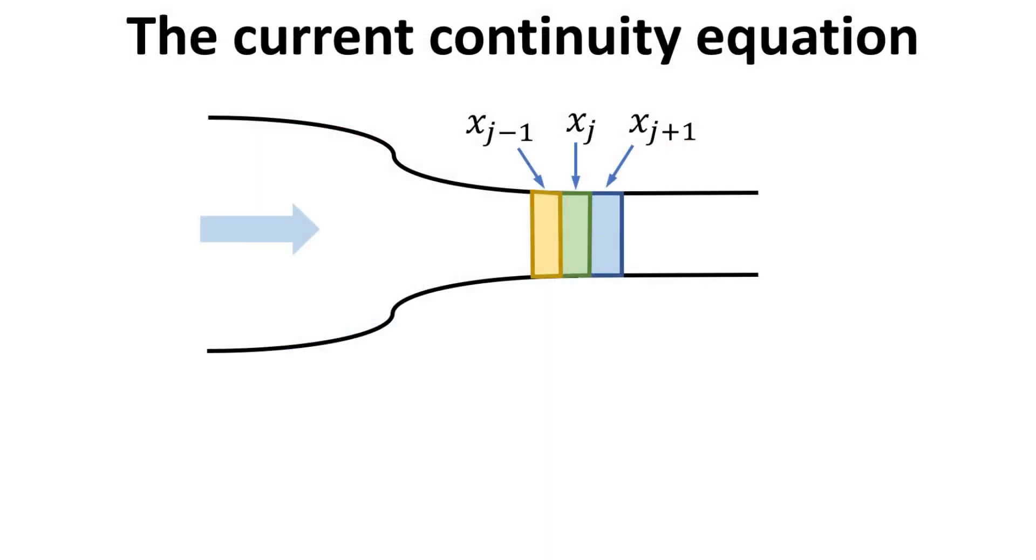Whenever we are dealing with particle flow, we unavoidably has to invoke the current continuity equation, which is a fundamental statement of the conservation of particles. We shall illustrate this with a simple example in the one-dimensional flow as shown. Let's focus on keeping track of the particles in these colored pillboxes at coordinate x j minus 1, j and j plus 1.